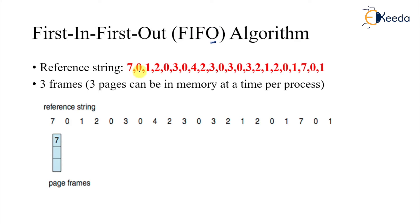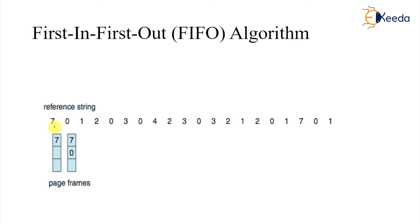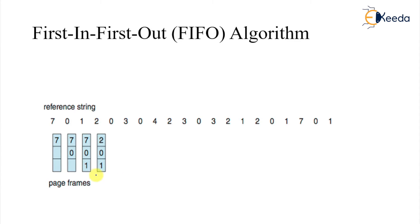The First In First Out page replacement policy uses a reference string — seven, zero, one, two, zero, and so on — with only three frames allocated. The policy says: the frame that came first into memory will be replaced first. Seven is a page fault, zero is a page fault, one is a page fault. When two comes, we have to decide who came first — seven came first, so seven goes out. That is the fourth page fault.